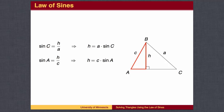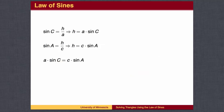Similarly, using angle A, the sine of A is h over c, so h is c times the sine of A. Combining these two equations, we get a times the sine of C equals c times the sine of A, which can be simplified as follows. This is the Law of Sines.